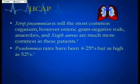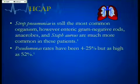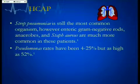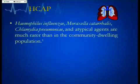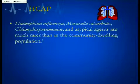For healthcare-associated pneumonia, Strep pneumo is still the most common organism; however, enteric gram-negative rods, anaerobes, and Staph aureus are much more common. Pseudomonas rates have been 4 to 25%, but as high as 52%. Haemophilus, Moraxella, and Chlamydia pneumonia are atypical agents and much rarer in the healthcare-associated population than the community-dwelling population.